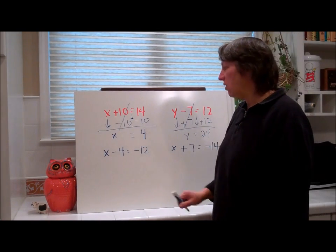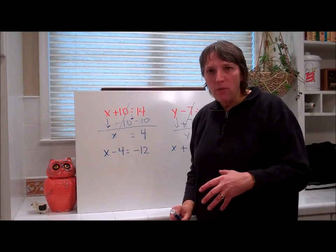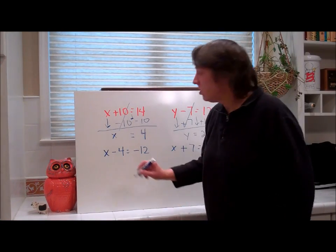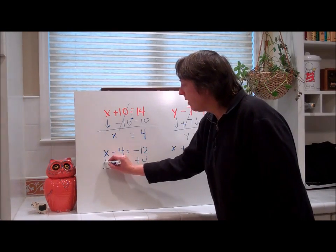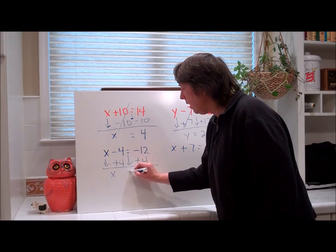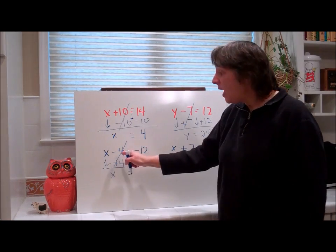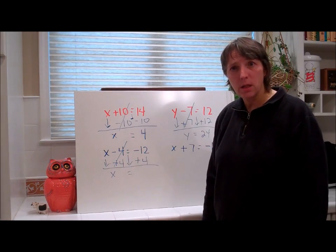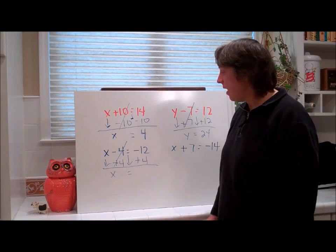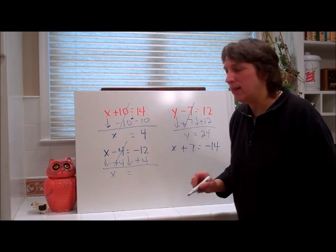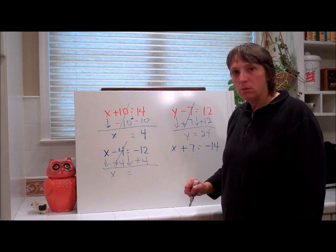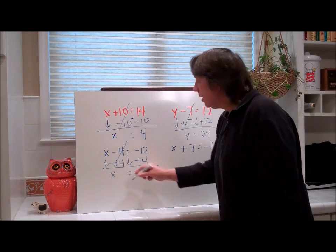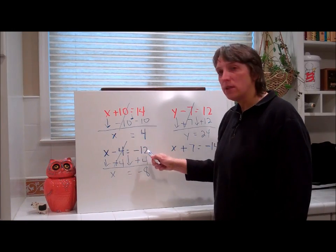Watch what happens here. We're subtracting 4 from the variable. What's the inverse? Adding 4. Adding 4 to both sides. We bring down the x. We bring down the equals. This cancels. Yes, you have to show that. You have to show that it cancels out. Then you read this. Just only what's there. Negative 12 plus 4. Negative 8. Negative 8 minus 4 is negative 12.